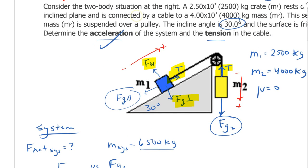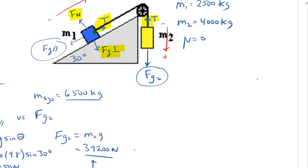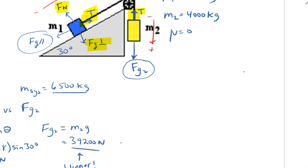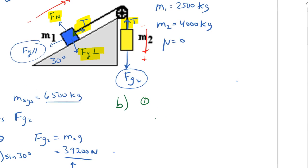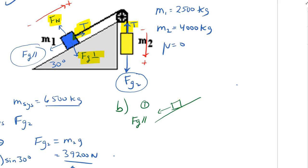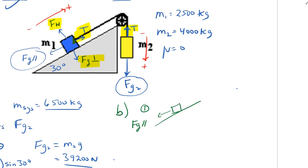We've done the acceleration, so now it's time to figure out the tension. Looking at object number one on the inclined plane: we have Fg parallel pointing down the slope, and a tension force pointing up the slope. Since this object is accelerating up the inclined plane, the tension force is larger. We also have Fg perpendicular and the normal force.